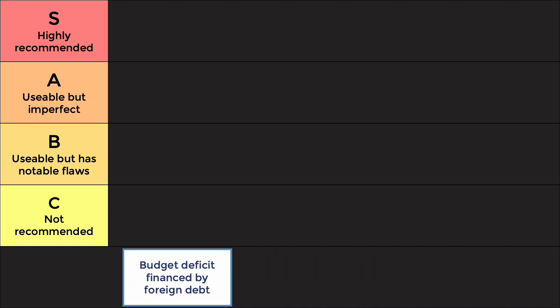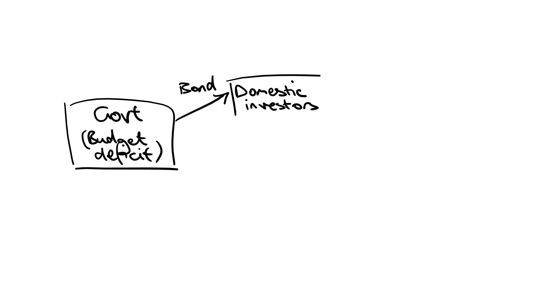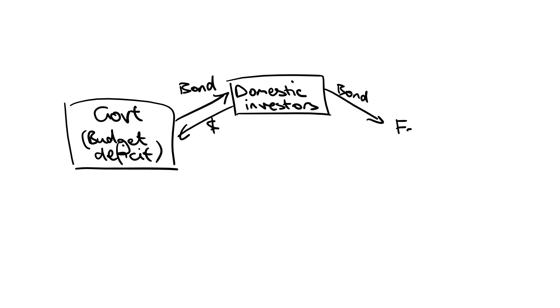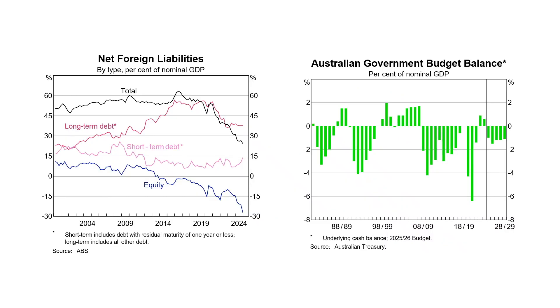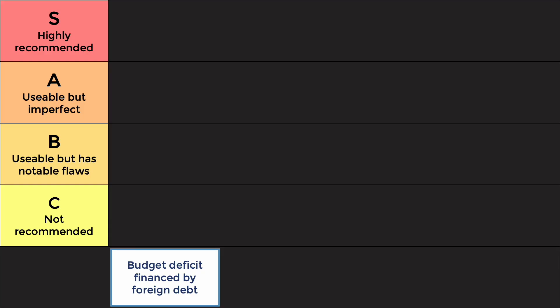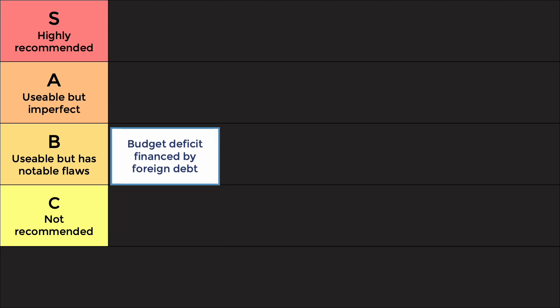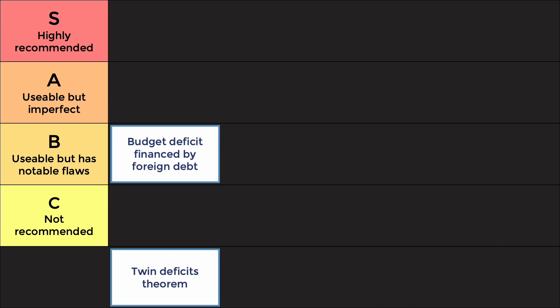One of the most common arguments is that the budget deficit contributes to foreign liabilities. Many students oversimplify this by failing to elaborate on the role of government bonds. To finance a budget deficit, the Australian government issues bonds, and with increasing globalisation, a lot of the bondholders are foreign investors. Foreign investment in government bonds contributes to net foreign debt and liabilities. The flaw is that the stats don't really support the correlation — foreign debt grew despite falling deficits and fell despite increasing deficits. Because of the tendency to oversimplify and the lack of statistical evidence, this one goes in B-tier.